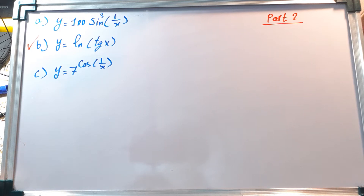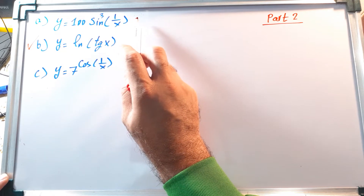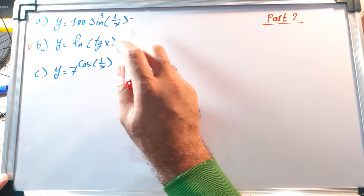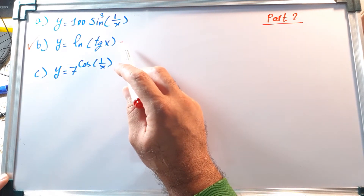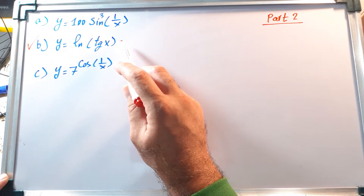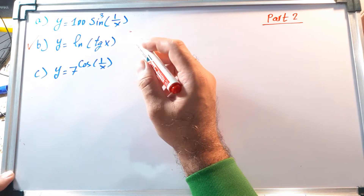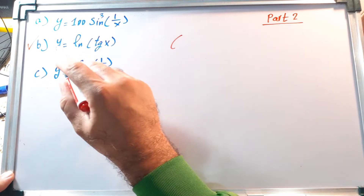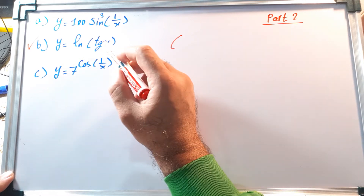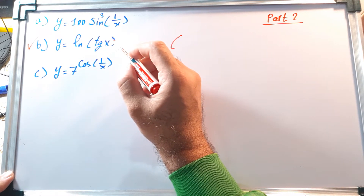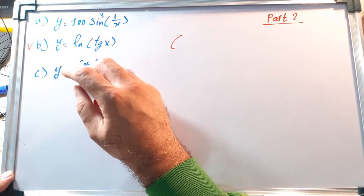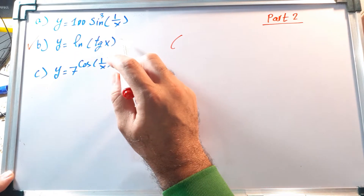Hello again, this is Part 2 of the previous video. In the previous video I solved that problem and found the derivative of that function. Now in this video I want to solve a new problem. Let's consider this formula: y equals ln of tangent of x, and we want to find the derivative of this function.